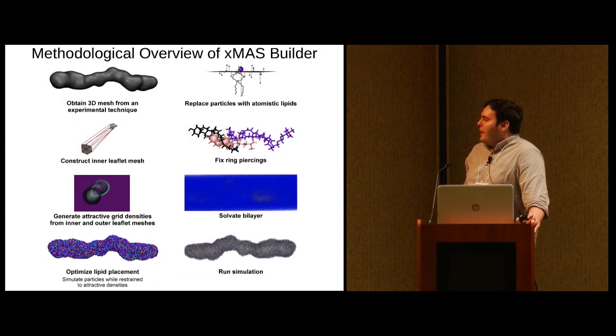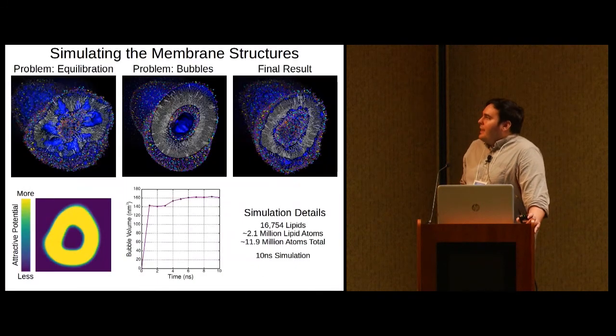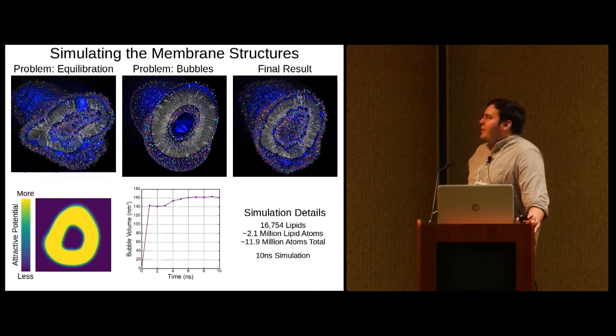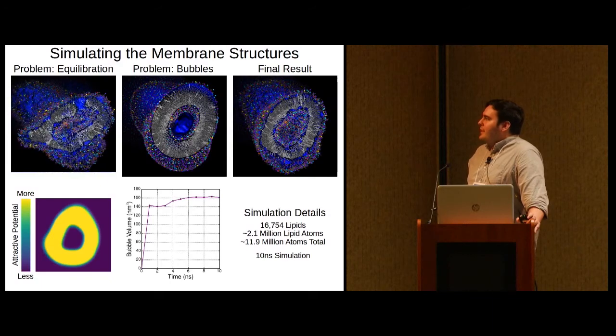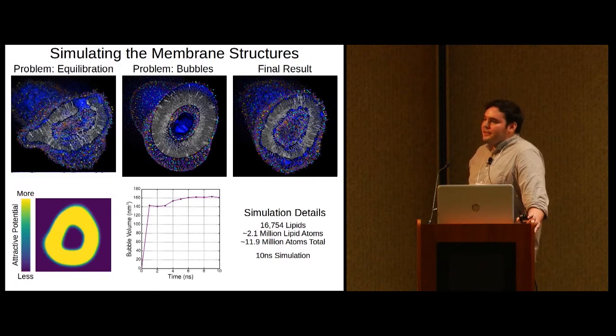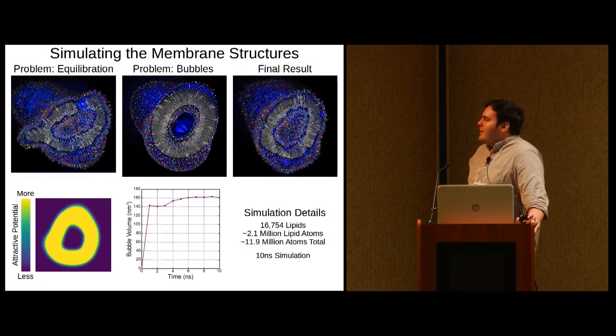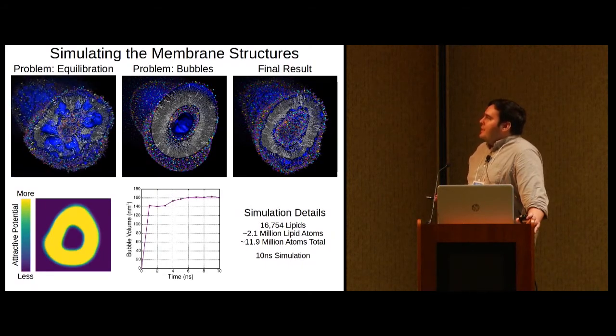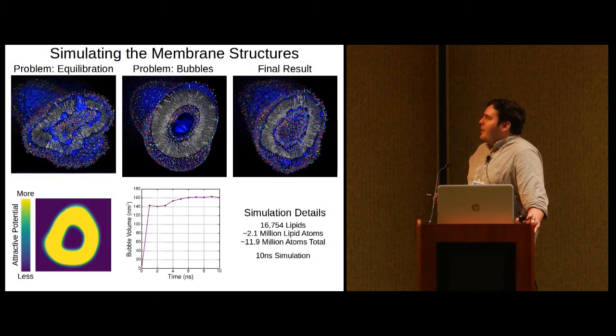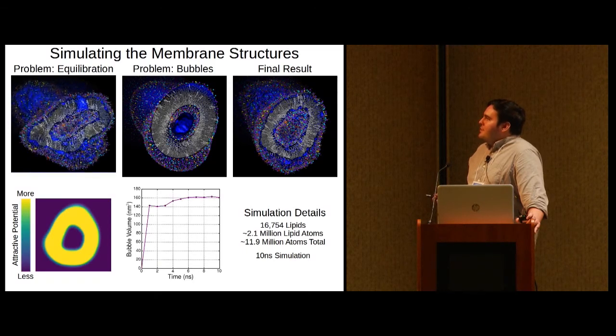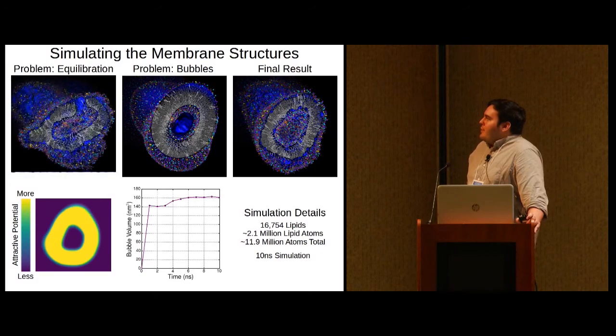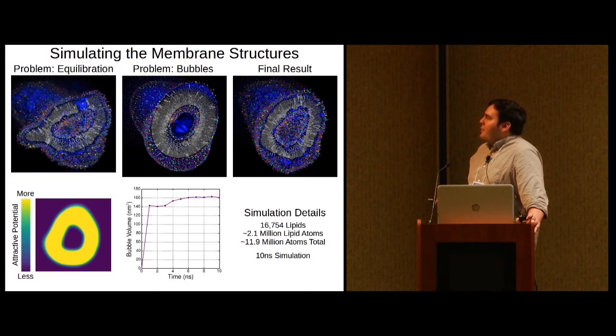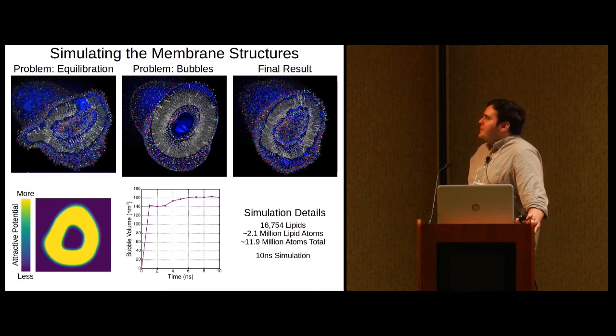So I'd finally like to talk about solvating the bilayer. As you might imagine, just applying the standard VMD plugins, solvate and auto-ionize, is a complete disaster for these types of complex systems. When you do that and just run an unbiased simulation, you end up with strange deformations. The cross-sectional shape of the membrane changes dramatically. You end up with a pore forming throughout your membrane. You have this strange budding situation over here.